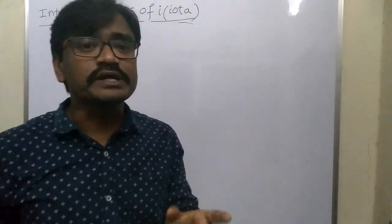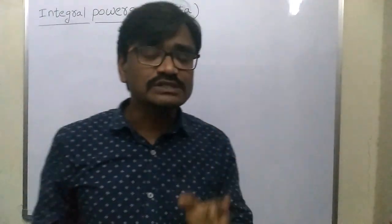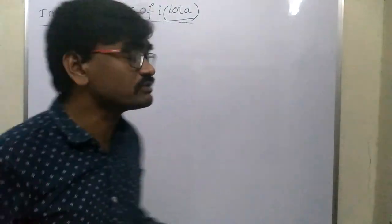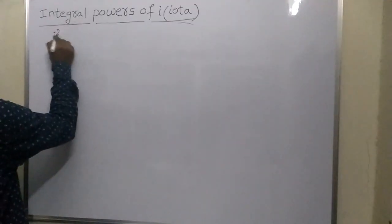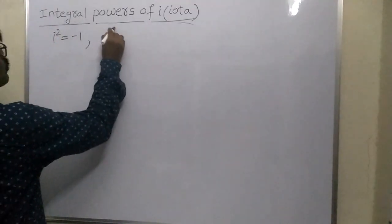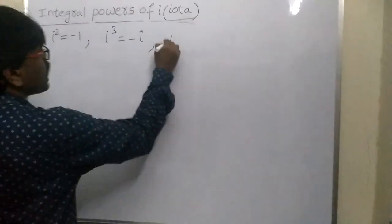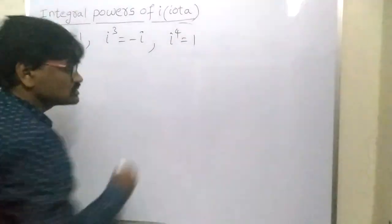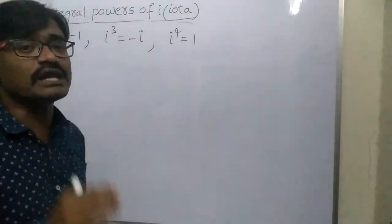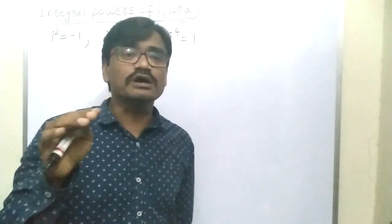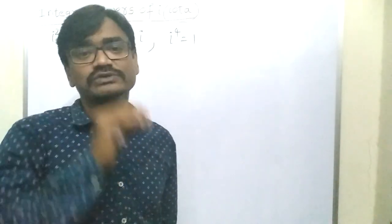In class 1, we completed the values of i², i³, i⁴. Students, what is the i² value? i² value is minus 1, i³ value is minus i, i⁴ value is 1. Using these 3 values, we can find out any integral power of i.